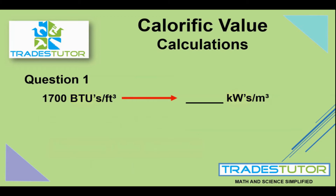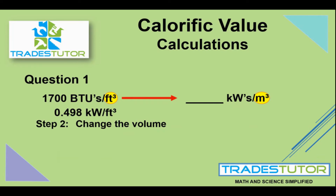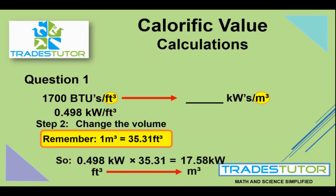So we put the 0.498 over here and realize that's still per cubic foot — we still have to change the volume. We're going from a cubic foot up to a cubic meter, which is a lot bigger, so there's going to be a lot more gas in there. One cubic meter is 35.31 times bigger than a cubic foot. So we multiply 0.498 by 35.31 to get 17.58 kilowatts per cubic meter — another way to express the calorific value of the gas, equivalent to 1,700 BTUs per cubic foot.